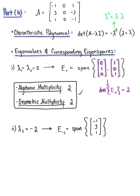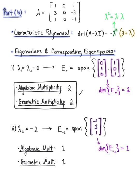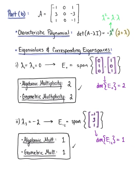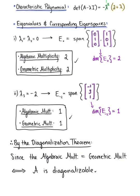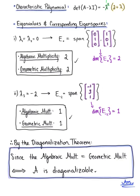We can see that this eigenvalue λ = −2 has an algebraic multiplicity of 1, because the binomial (2 + λ) appears once in the characteristic polynomial, and it has a geometric multiplicity of 1, because the dimension of eigenspace E sub −2 is equal to 1. Therefore, by the diagonalization theorem, since the algebraic multiplicity equals the geometric multiplicity for all eigenvalues, matrix A is diagonalizable — which confirms our previous conclusions.